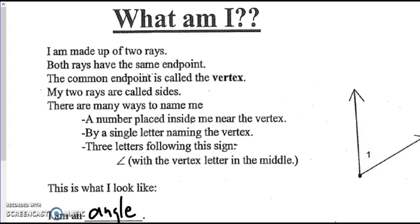Okay, so I'm made up of two rays. Both rays have the same end point. The common end point is called the vertex. My two rays are called sides. And there are many ways to name me, which we'll get to on the next slide. A number placed inside me near the vertex, by a single letter naming the vertex. This is a special case that we're going to definitely discuss here. And three letters following this sign, and please note, the vertex letter must be in the middle.